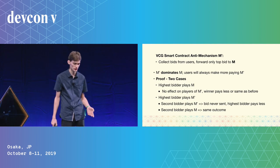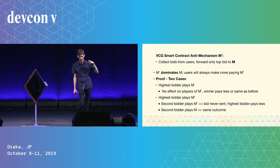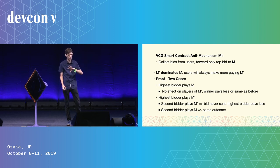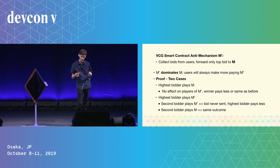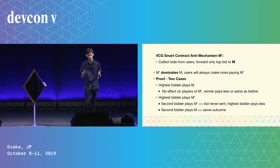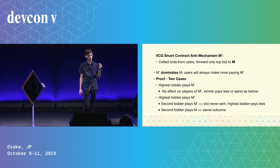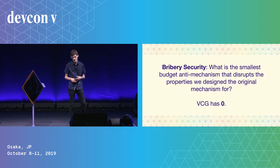For the VCG second-price auction, here's a simple anti-mechanism M-prime: it collects bids from users and forwards only the top bid to the original mechanism M. If the highest bidder plays through M-prime, and the second bidder also plays through M-prime, their bid is never forwarded and the highest bidder pays less. Playing through M-prime weakly dominates playing M directly. This disrupts VCG's dominant strategy truthfulness because the auction no longer receives true valuations — VCG has zero security against bribery.